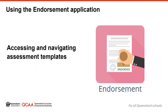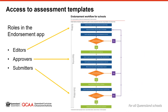Using the Endorsement Application – Accessing and Navigating Assessment Templates. There are three levels of access in the endorsement application. These are used to help schools manage the development and approval of assessment instruments before they are submitted to the QCAA for endorsement. During this presentation, the endorsement workflow for schools is used to step through the process of editing, approving and submitting an assessment instrument.